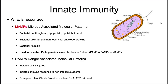MAMPs used to be called pathogen-associated molecular patterns (PAMPs), but we've now realized that they recognize more than just patterns on pathogens — they also recognize them on all microorganisms. Innate immunity also recognizes DAMPs — danger-associated molecular patterns — which indicate a cell is injured and initiate an immune response to a non-infectious agent. Examples include heat shock proteins, nuclear DNA, ATP, and uric acid. If you're seeing these things in general tissues, it means there are damaged cells around and the body needs to respond to repair the damage.